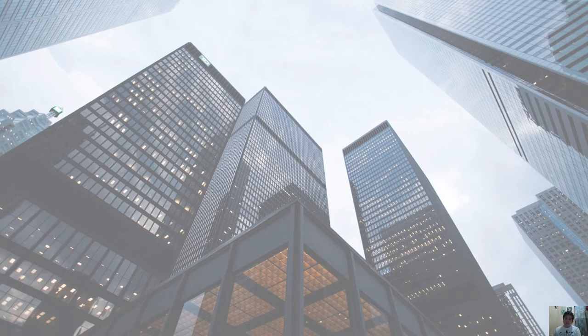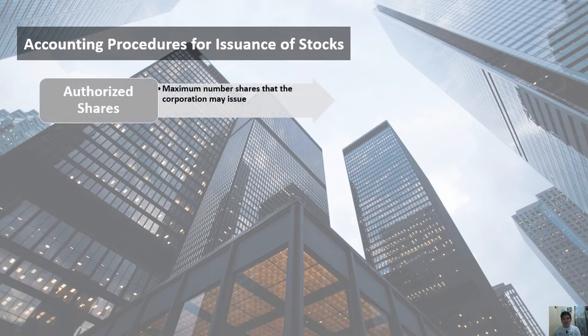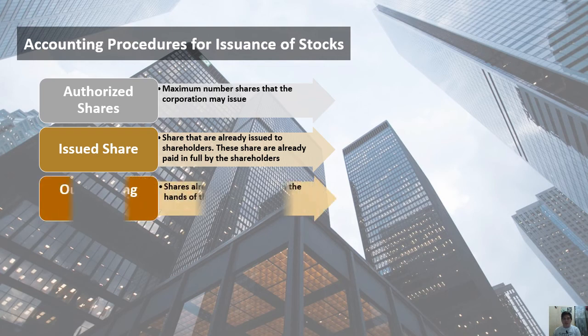Now let's proceed with the accounting procedures for the issuance of stocks. But first, let's familiarize ourselves with the different kinds of shares we will be encountering. Number one: authorized shares — the maximum number of shares that a corporation may issue, reflected on the articles of incorporation. The corporation is not allowed to issue more than its authorized amount. Number two: issued shares — shares already issued to shareholders and already paid in full by the shareholders.